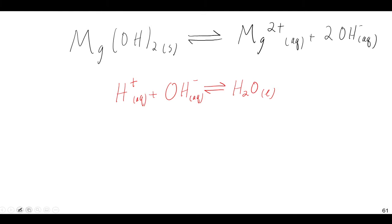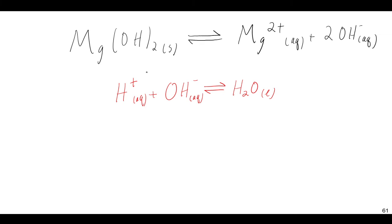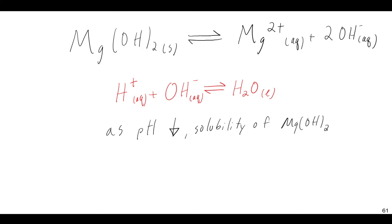So imagine that you have this initial setup where you've dumped some magnesium hydroxide in water. It's established an equilibrium where some of it is solid and some of it is in the aqueous solution form as ions. If you now add some acid to this, it will react and neutralize the OH⁻, removing it and prompting more magnesium hydroxide to fill that void. So this is how pH can affect solubility — as the pH decreases, the solubility of magnesium hydroxide increases.